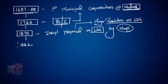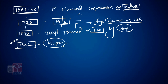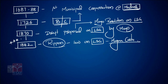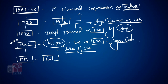Then in 1882 — very important, you must mention this point — Mr. Rippon gave the first law on local self-governance, called the Magna Carta of local self-governance in India. Mr. Rippon is called the father of local self-governance. Next, the Government of India Act 1919 made local self-governance part of the provincial list subject.